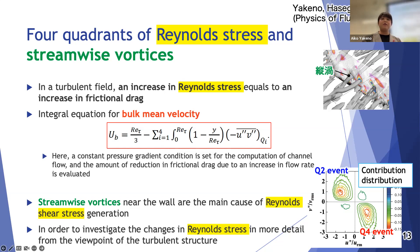The FIK identity is famous for that relationship, but that equation can be converted to the bulk mean velocity increase. As you know the streamwise vortices near the wall are the main cause of Reynolds shear stress generation. So I did my first trial to clarify the mechanism to reduce the drag by focusing on the streamwise vortex.